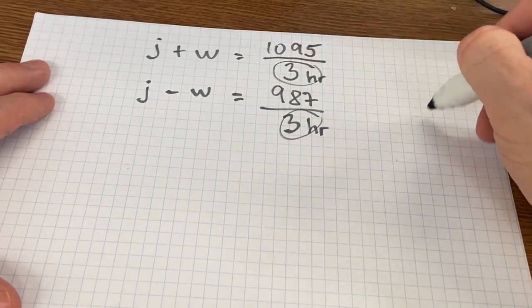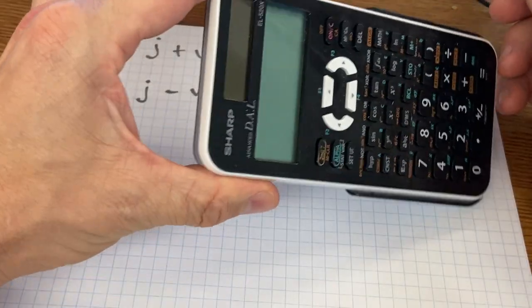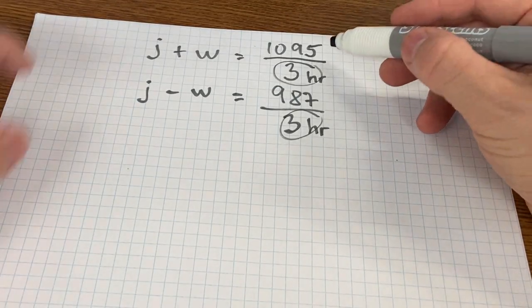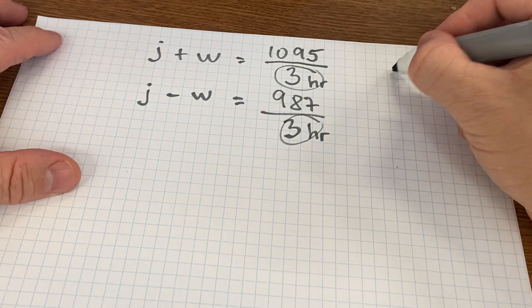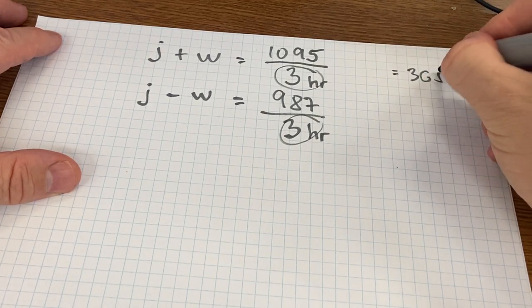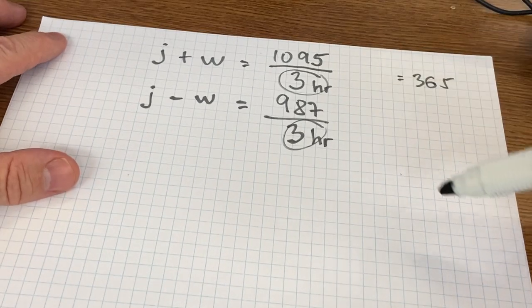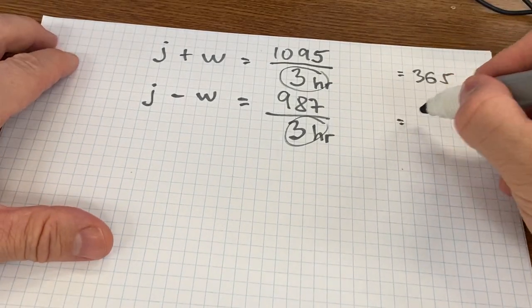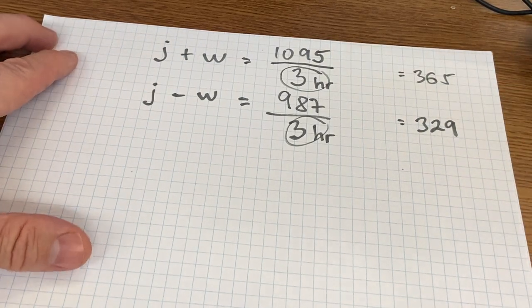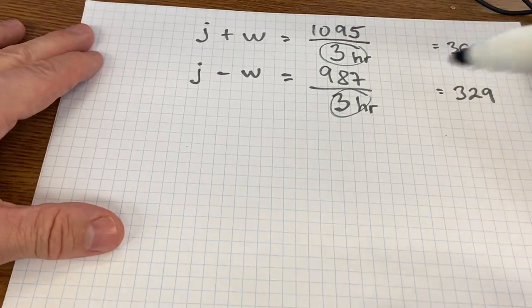So over here on the margins, if I put the numbers into a calculator, 1095 divided by 3 is 365, and 987 divided by 3 is 329.